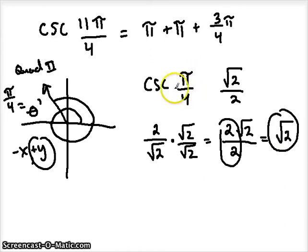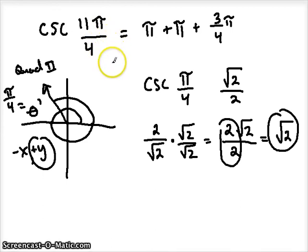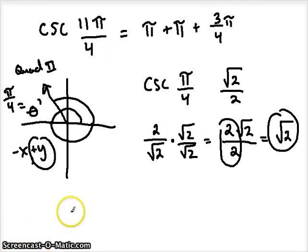Hopefully those three steps help you evaluate trig expressions. As long as they are in increments of 30, 60, or 45 degrees, or quadrantal angles, you'll be able to use reference angles to help you evaluate. Good luck finding the values of some simple trig expressions.